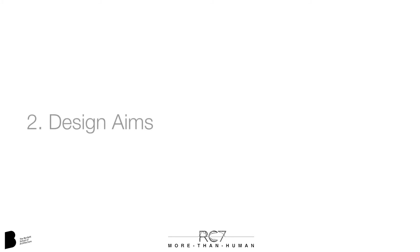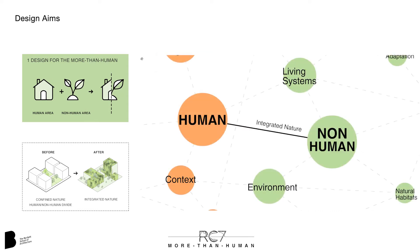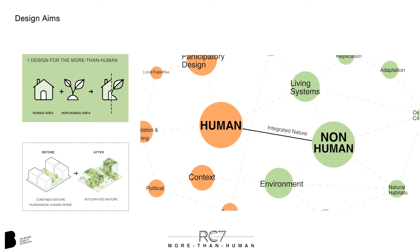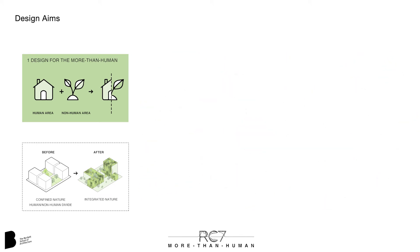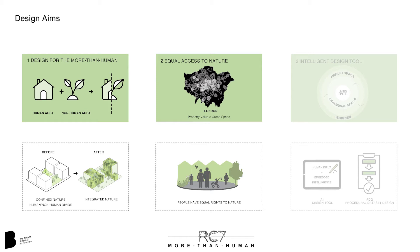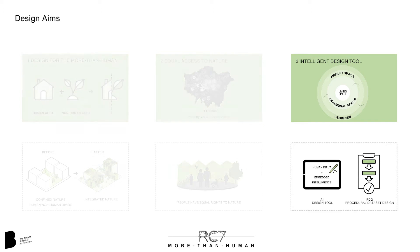Our work questions how machine learning can be used to implement principles of ecological systems. It addresses three main topics: 1. Design for the more than human — how we can integrate human and non-human spaces equally. 2. Design for equal access to nature. 3. The creation of an AI-powered sketch tool.